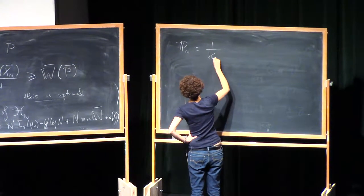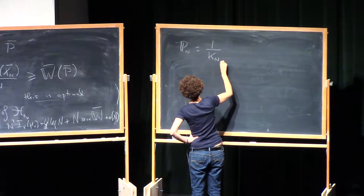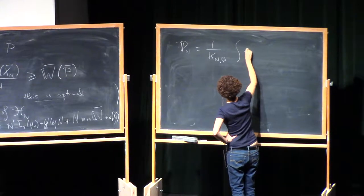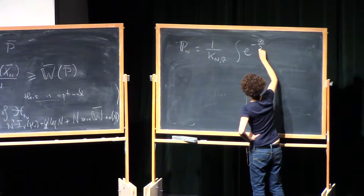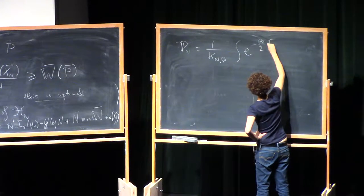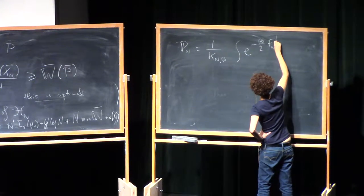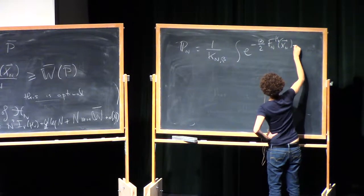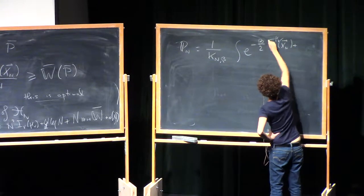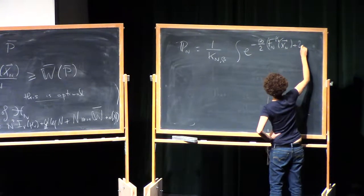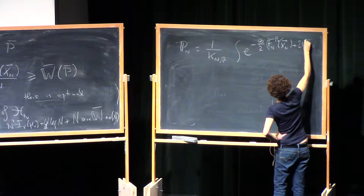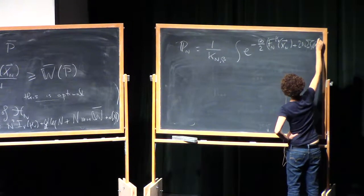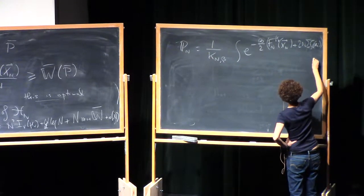After I take out some leading order terms, I can rewrite it as exponential minus beta over 2, f_n mu v, plus the confining terms, which are there just to keep the particles inside sigma.